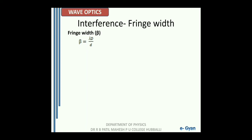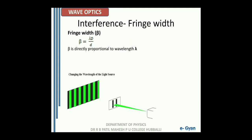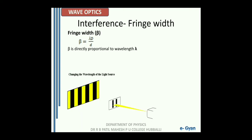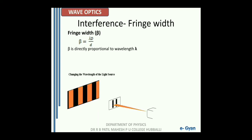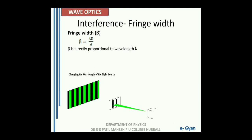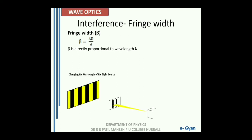If we make changes in the experimental setup, the value of beta will change. Beta is directly proportional to the wavelength lambda. As we go from violet to red — through blue, green, yellow, orange, red — the wavelength increases. As wavelength increases, the fringe width on the screen increases, so the number of fringes on the screen decreases because the width between two fringes is increasing. The size of each fringe increases as we increase the wavelength.